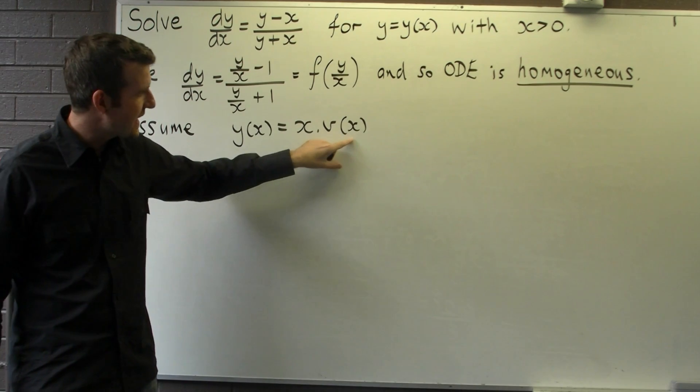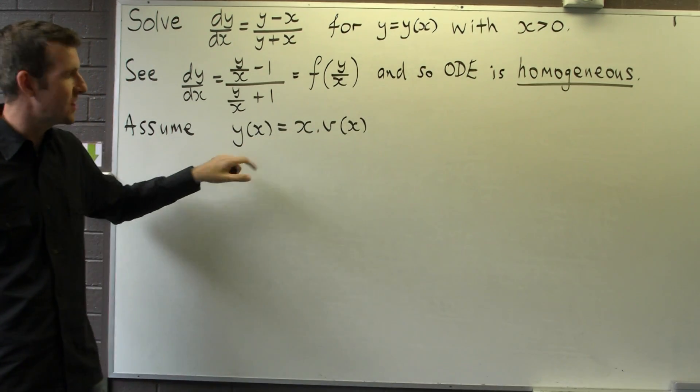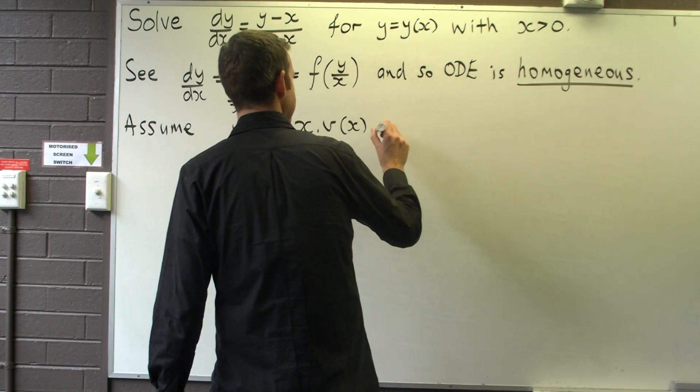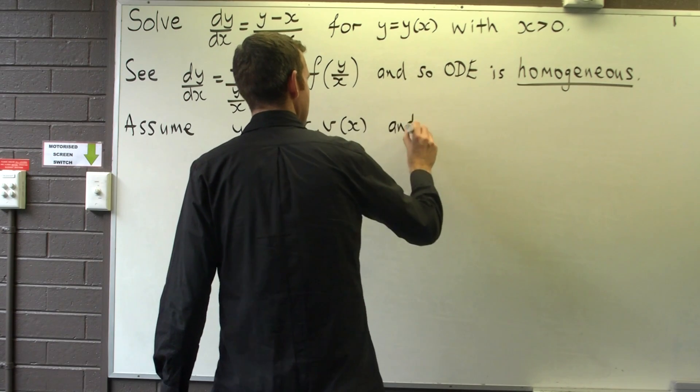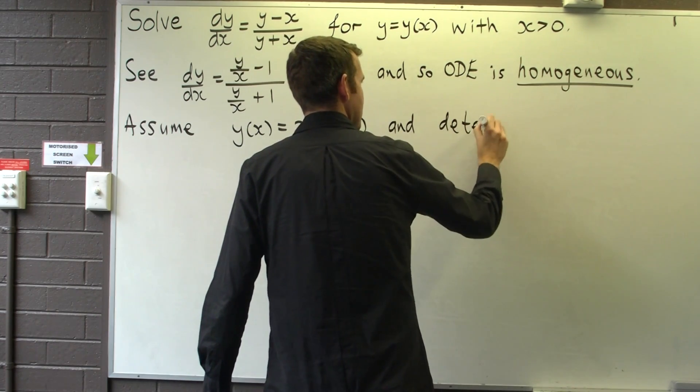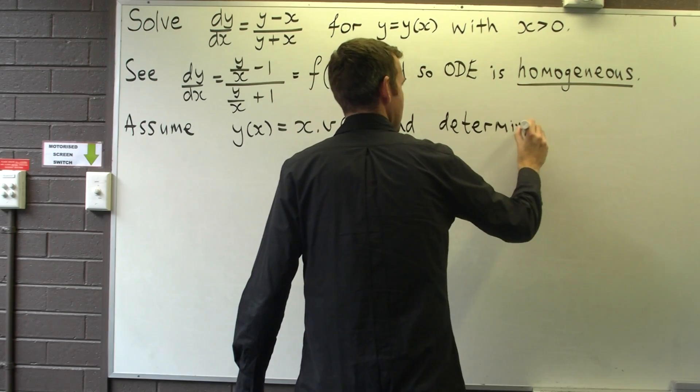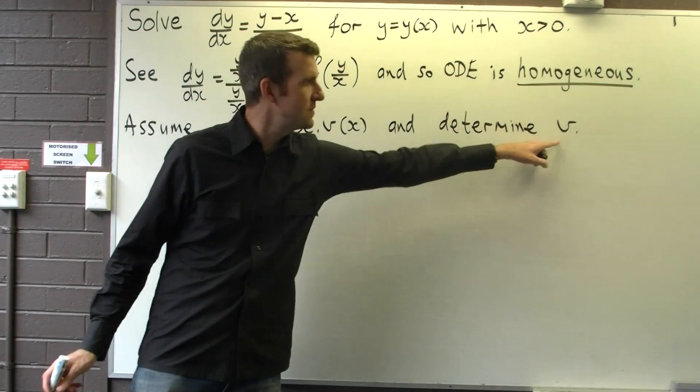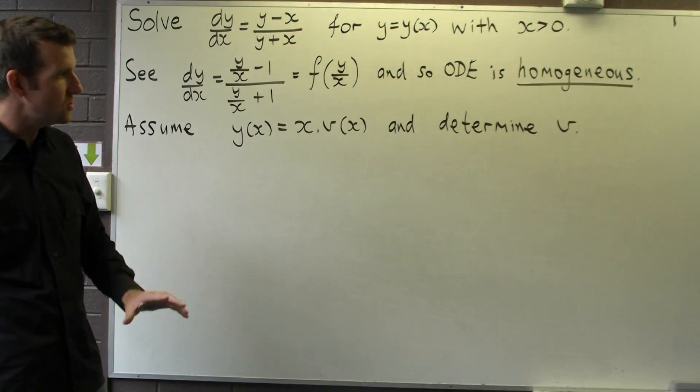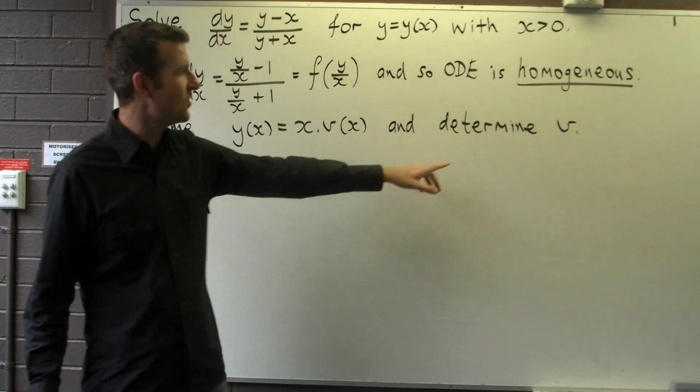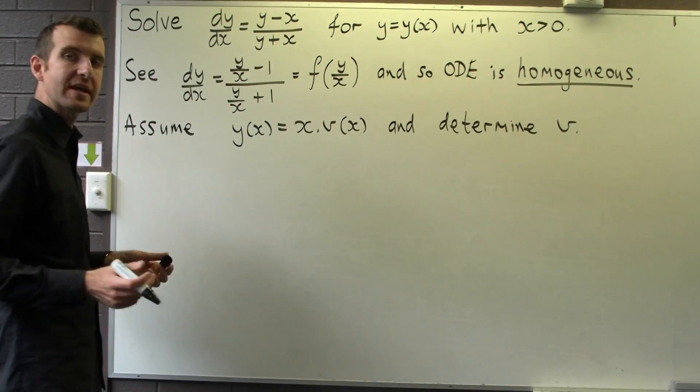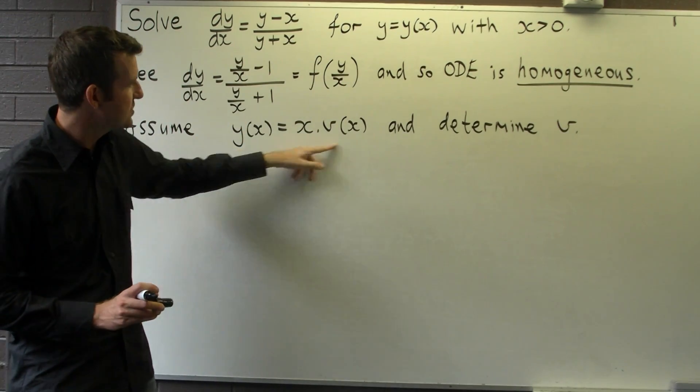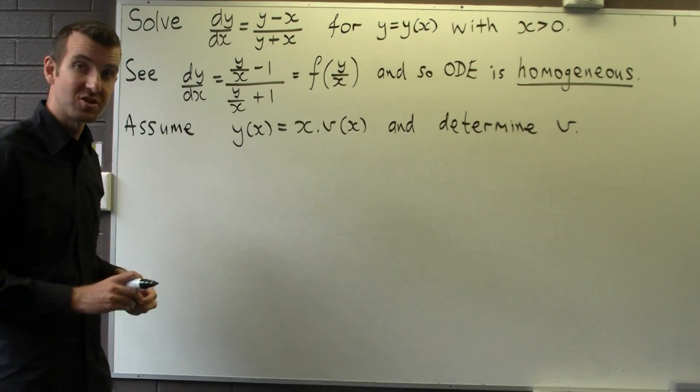And what we do is we calculate v, and then just multiply through by x to get y. So our objective here is to determine v. So how do we do that? We want to set up a new differential equation involving v. We're going to do that in two ways. We're going to use our original ODE, and we're going to use this particular substitution.